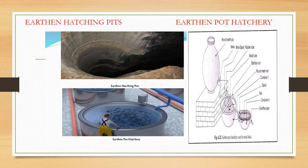First, we talk about the earthen hatching pit. The earthen hatching pit size is 3×2×1 dimension. The pits are dug in several rows and the inner walls are plastered with mud — that is red soil. Fertilized eggs are put in the pit and hatching occurs in 24 hours. We have to manage proper water flow, proper radiation, and we have to remove waste.